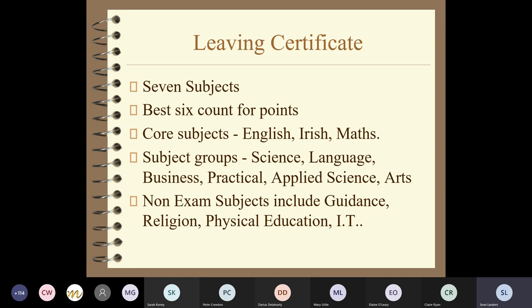Here is the established leaving certificate. If you're going directly into fifth year from third year, or going from transition year into fifth year, you have to choose seven subjects. The best six subjects out of those seven count for points, and they are examined at the end of sixth year. Core subjects are English, Irish, and maths - you must do them. If you're exempt from Irish, you can substitute another subject. The subject groupings fall under the sciences, languages, business, practical, applied sciences, and arts/humanities.